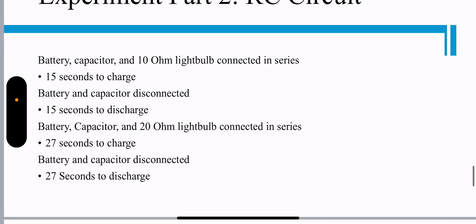The battery capacitor and 10 ohm light bulb connected in a series. The capacitor takes 15 seconds to charge and 15 seconds to discharge. The battery capacitor and a 20 ohm light bulb connecting in series takes 27 seconds to charge and 27 seconds to discharge.